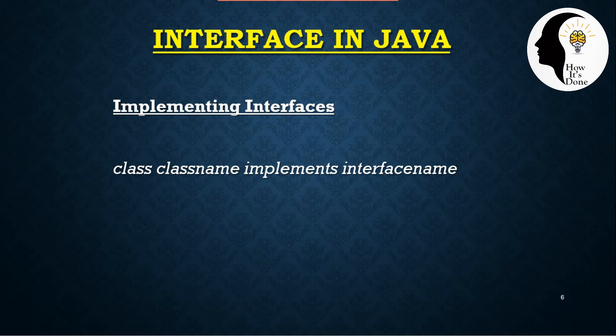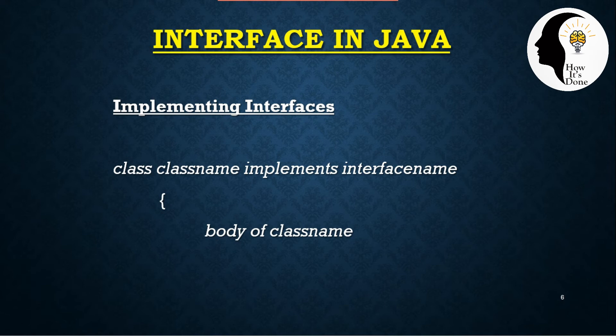We need to implement the interface in a class using: class ClassName implements InterfaceName. Inside the body of the class, we need to declare and define the methods — that is, we need to provide the method body.